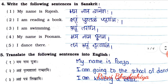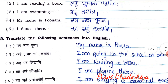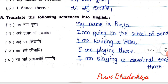Question number four: write the following sentences in Sanskrit. First: My name is Rajesh — Mamanama Rajeshya. Second: I am reading a book — Aham Pustakam Patamiha. Third: I am swimming — Aham Tarami. Fourth: My name is Poonam — Mamanama Poonama. Fifth: I dance there — Tatra Aham Nrutyami.